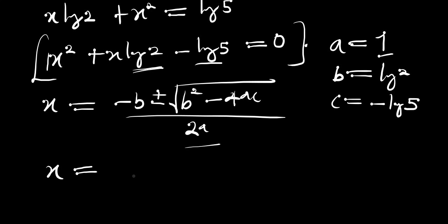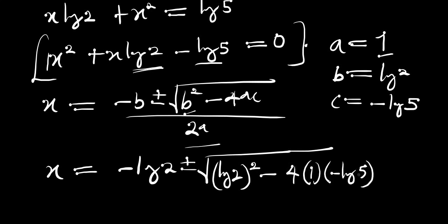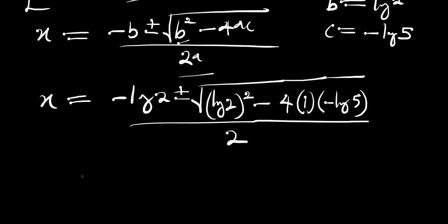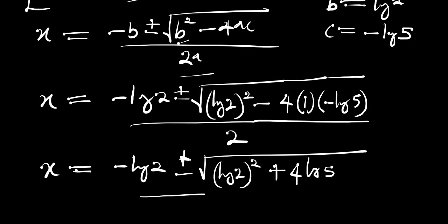Let's insert all those values into the formula. We have x equals negative log of 2 plus or minus the square root of log of 2 squared minus 4 times 1 times negative log of 5, and everything divided by 2 times 1. Simplifying inside the square root, we have log of 2 squared plus 4·log of 5, all divided by 2.